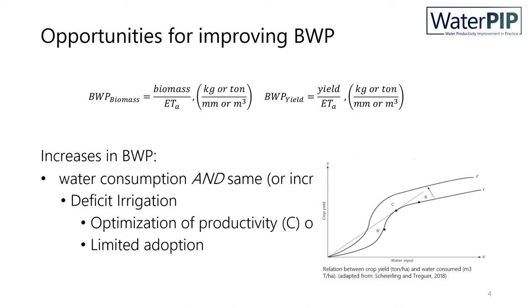Normally irrigation focuses on maximization of production, which is seen in point B in the figure. Deficit irrigation is focused on optimization of productivity and not of production.